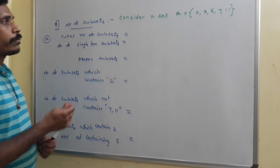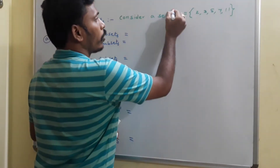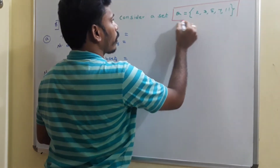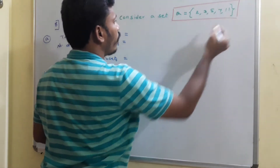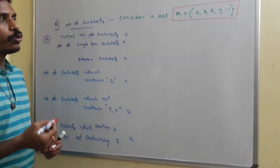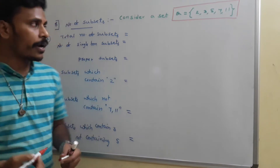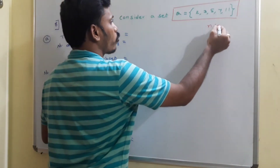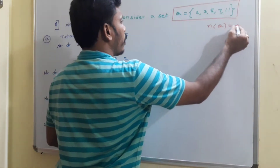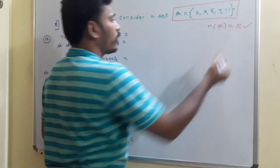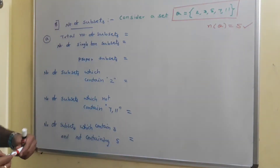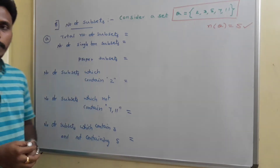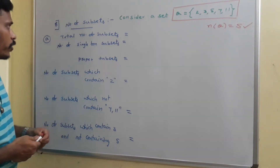Now look at this set Q = {2, 3, 5, 7, 11}. There are five elements in this set, and it is very clear that n(Q) = 5, meaning the number of elements in that particular set is 5. Now we need to answer some questions about this set.